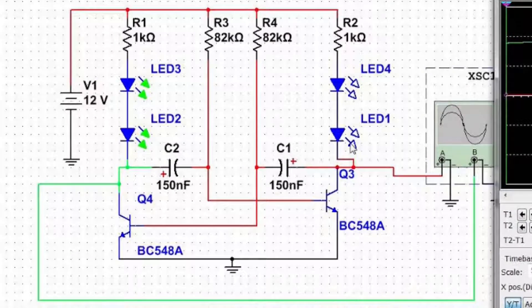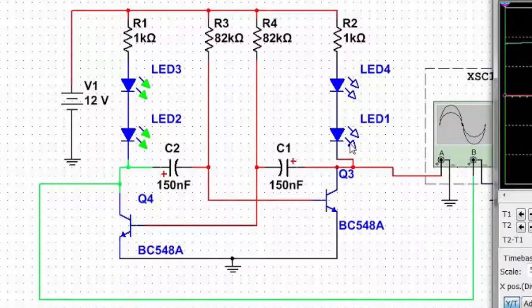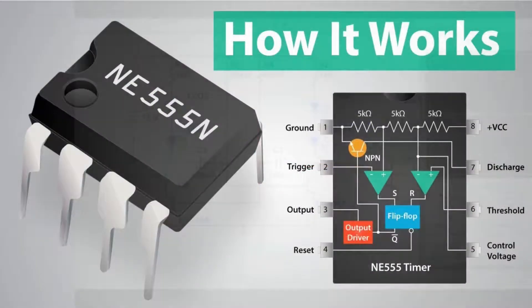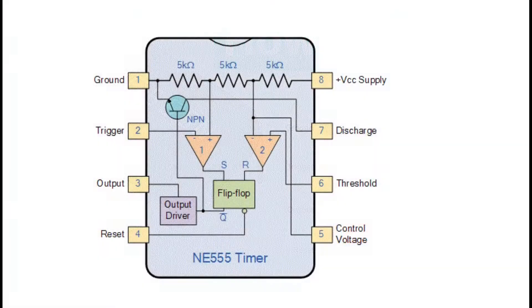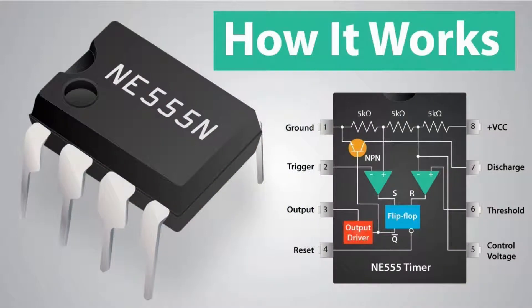The very basic astable oscillator is made with two transistors and some external passive components. However, there are several ICs in the market which serve the same function with high precision and with the additional advantage of reduction in cost and size. And of course, the 555 IC is on the top of the list.